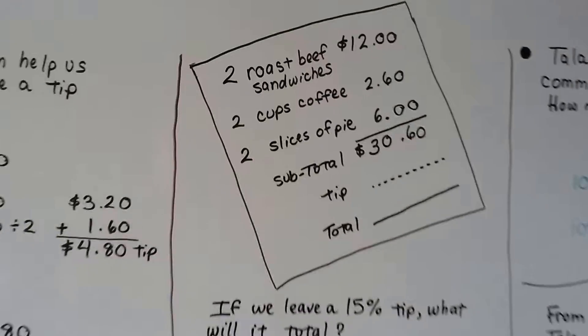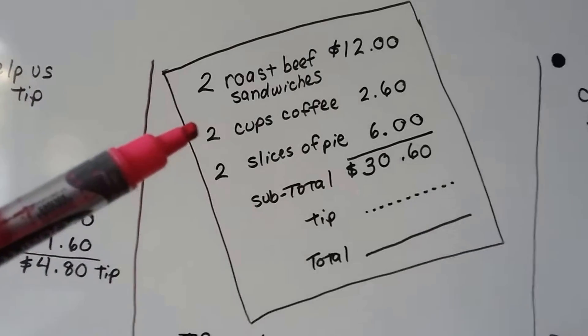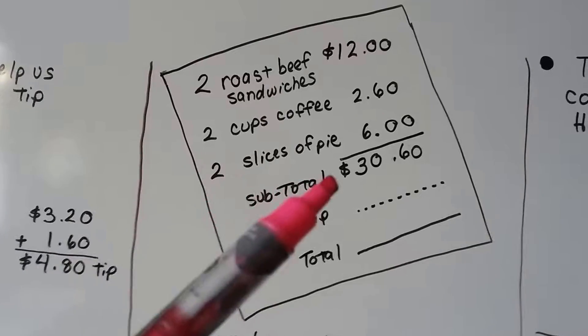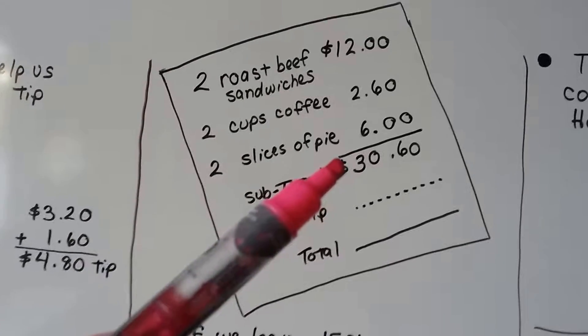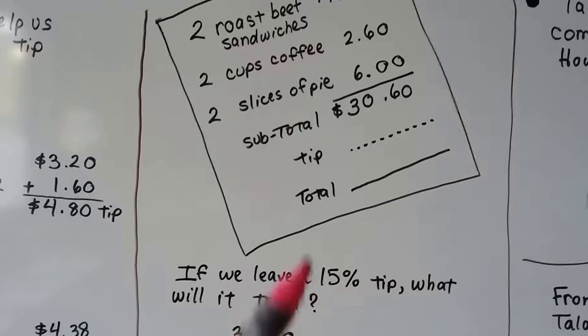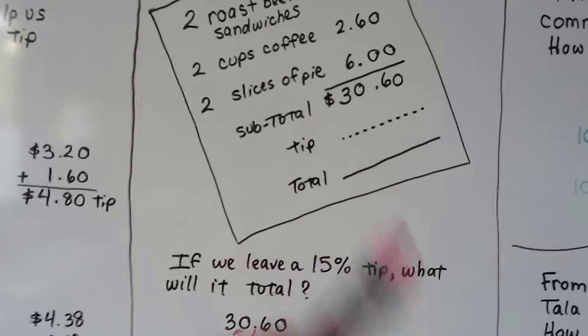Take a look at this bill from a restaurant. It says two roast beef sandwiches, $12, two cups of coffee, $2.60, two slices of pie, $6, and it came out to $30.60. If we leave a fifteen percent tip, what will this total be? So we need to leave a fifteen percent tip and then total it.